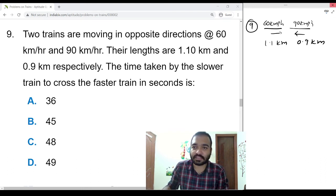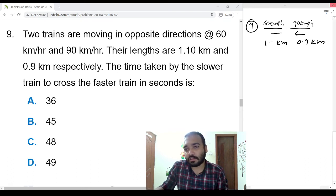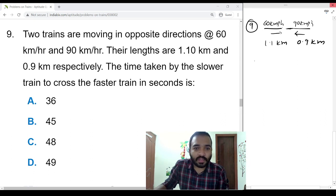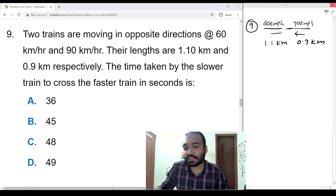Their lengths are 1.1 kilometers and 0.9 kilometers respectively. The time taken by the slower train to cross the faster train in seconds. Here it should cover the two trains distance because time taken by the slower train to cross the faster train, slower train is 60 km/h.